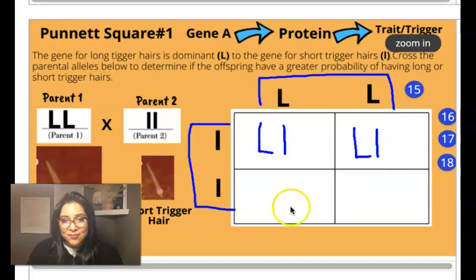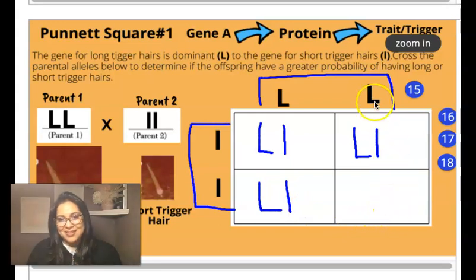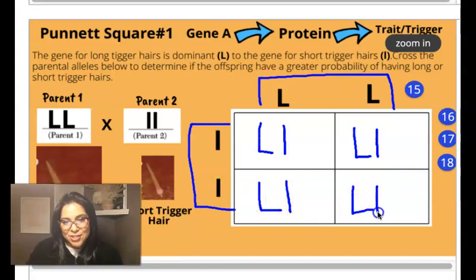We're going to do the same from the bottom. Go up and bring this dominant allele down from parent one. Go to the side and bring the recessive allele from parent two over. Final box, up, dominant allele from parent one, side, recessive allele from parent two.